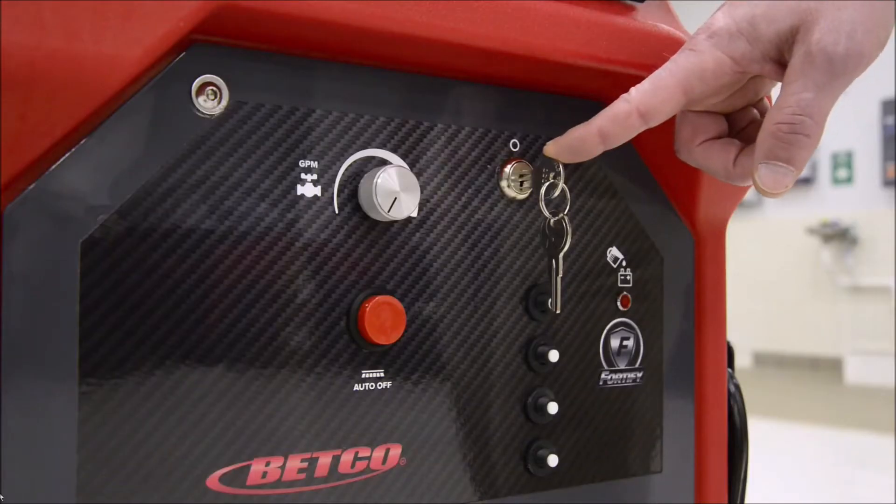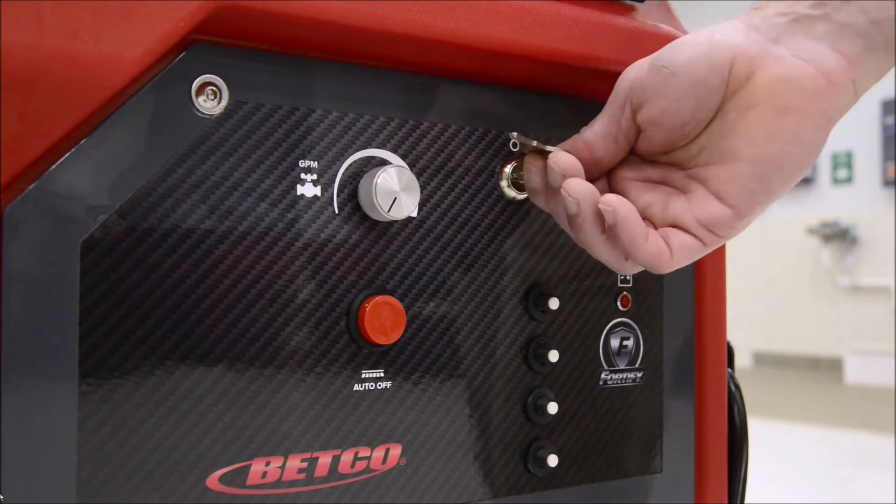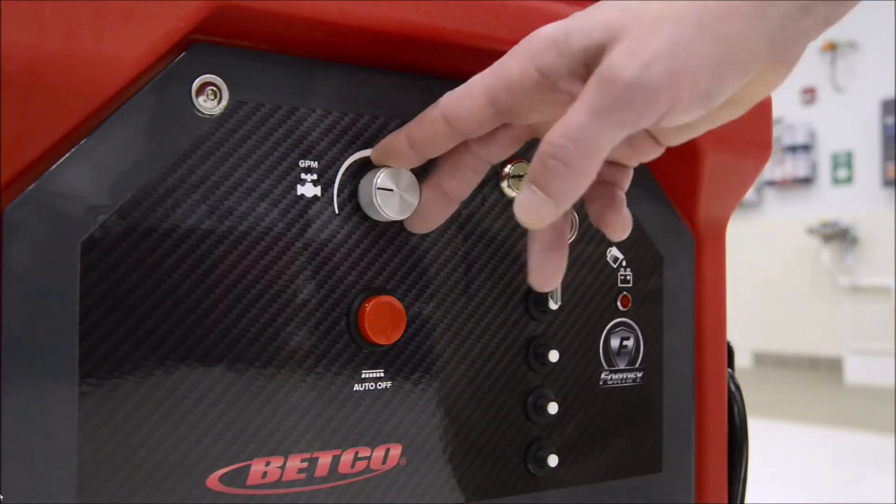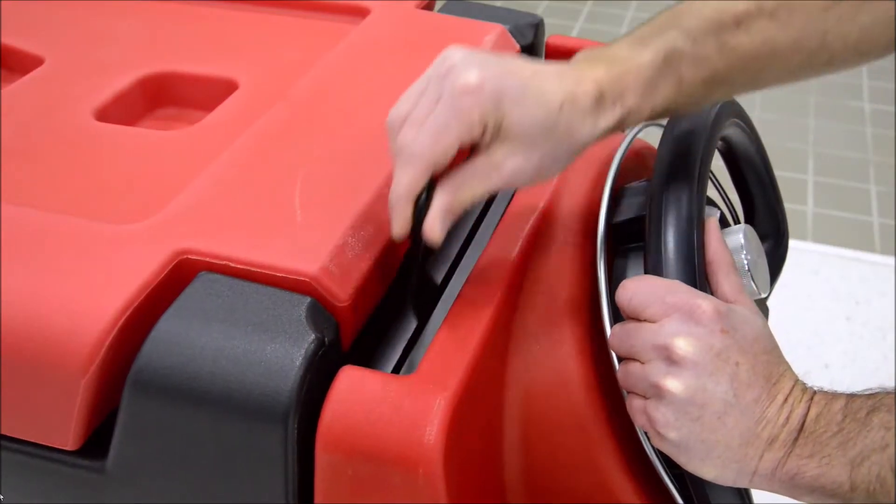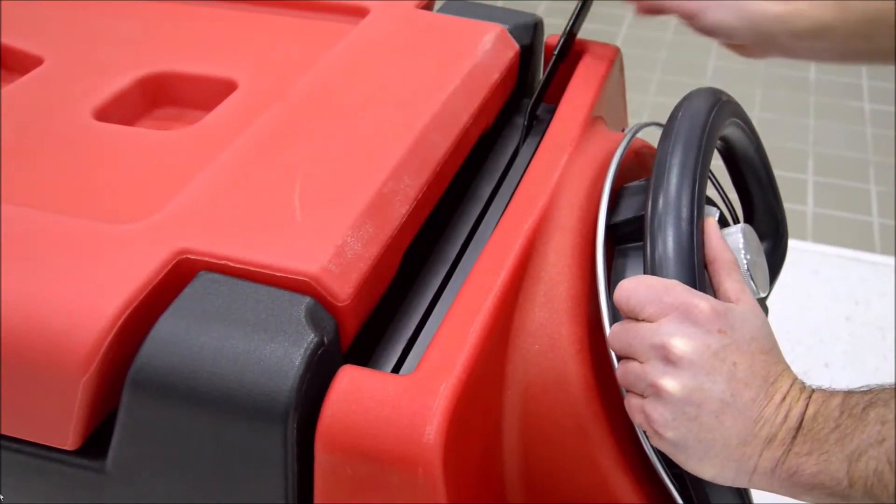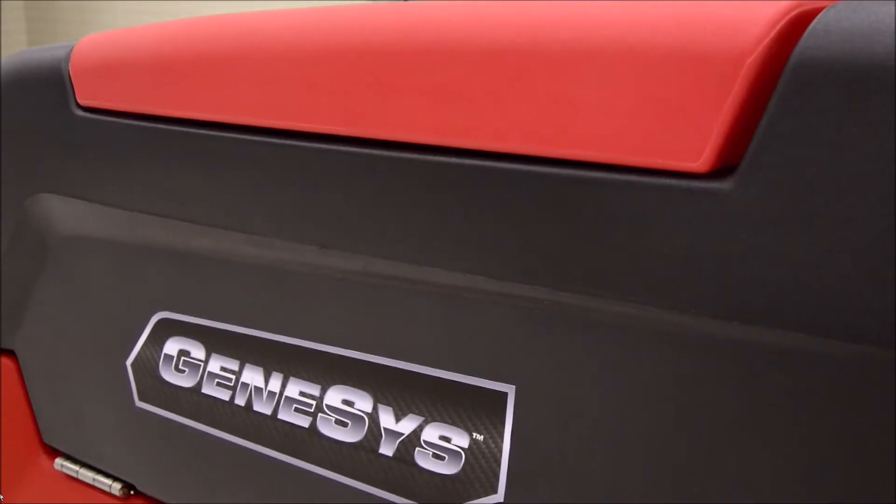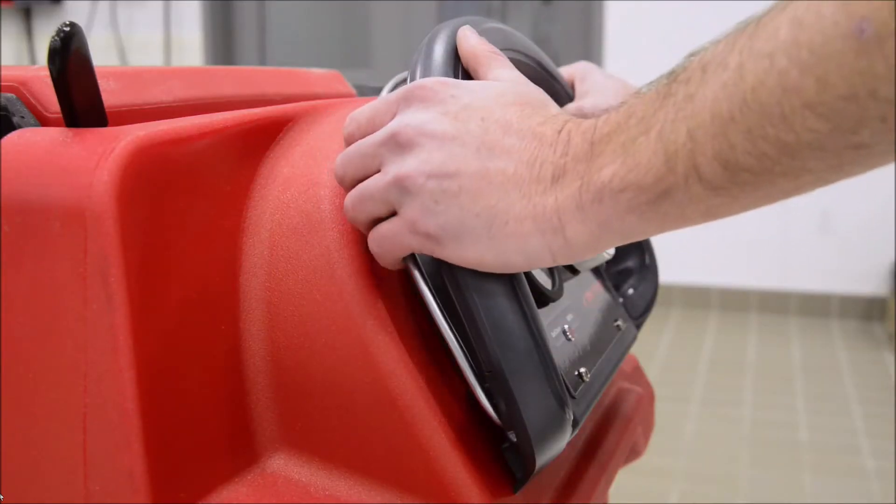On the lower console, you have the power on-off key switch, solution flow adjustment knob and motor circuit breakers. And the last two key operational elements are the squeegee up-down lever, which also activates the vacuum in the down position and the bail activation trigger.